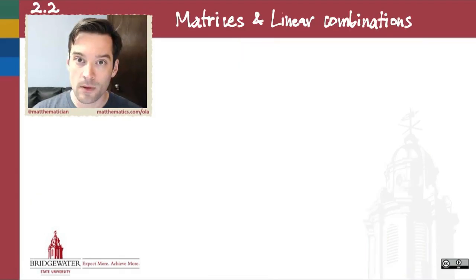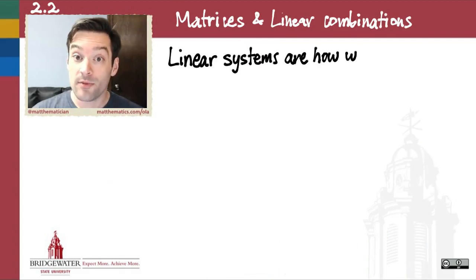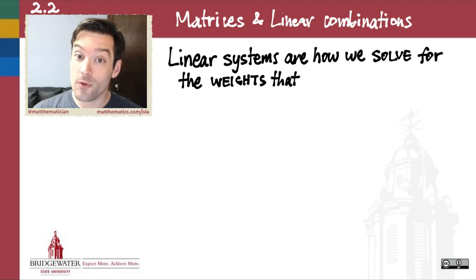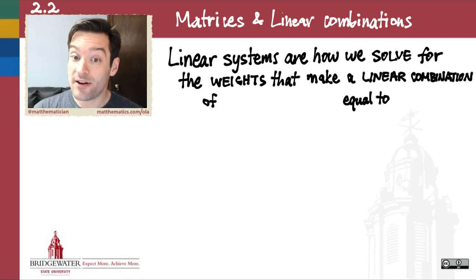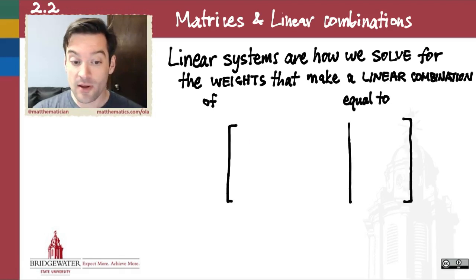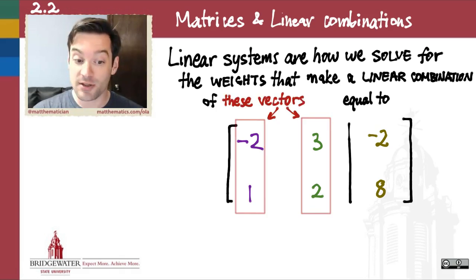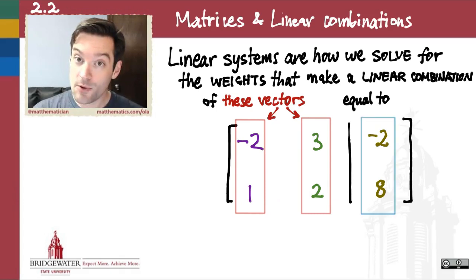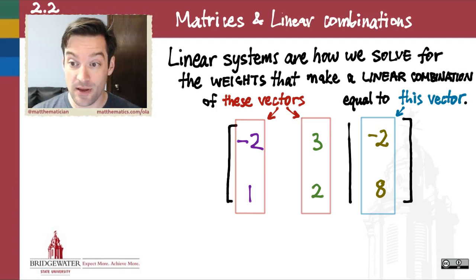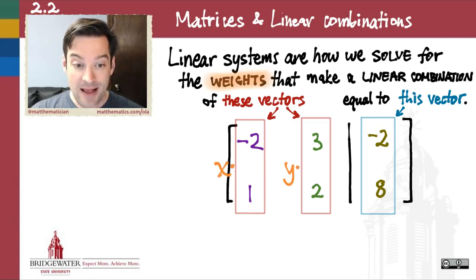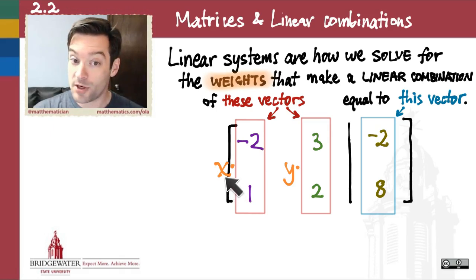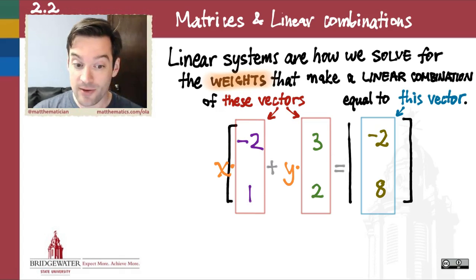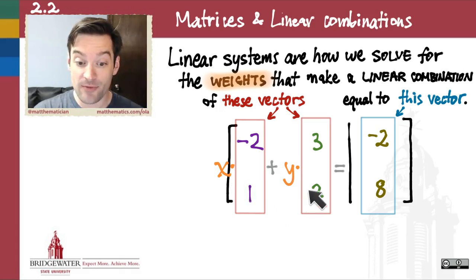There's more to the story, however. Linear systems of equations are really just how we solve for the weights — the unknown weights — that make a linear combination of some set of vectors equal to some other vector. Our augmented matrix holds those vectors in place: the columns in the coefficient matrix are the vectors being combined, the right-hand side is the target vector, and the unknown scalars x and y are the weights multiplied by those vectors, with results added together and set equal to that right-hand side.